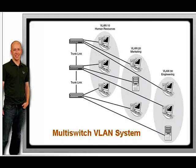VLANs are flexible in terms of how they are used in network equipment. Imagine a building that has LAN cabling and a single switch installed, but four different tenants. You can create four different VLANs, one for each tenant, and no tenant will see or hear from the other tenants on the other VLANs.